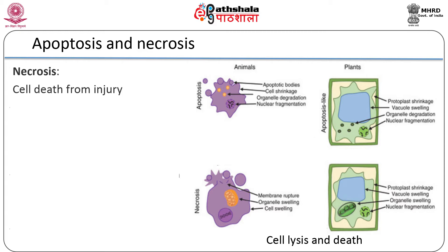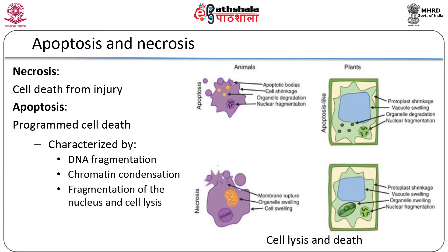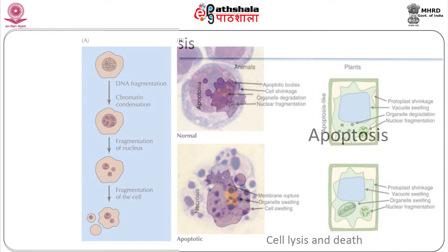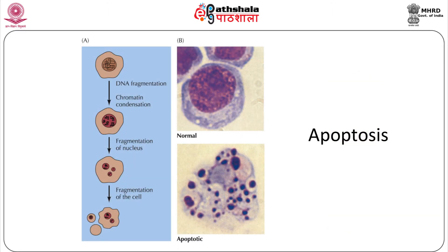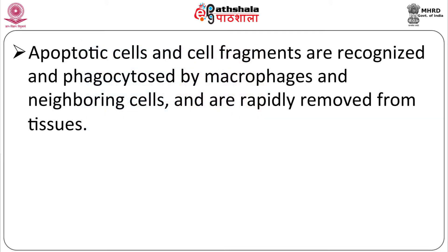Necrosis is an accidental cell death from acute injury, whereas apoptosis is a programmed cell death — an active process. Apoptosis is characterized by DNA fragmentation, chromatin condensation, fragmentation of the nucleus, and finally fragmentation of the cell itself. In the slide we can see how the cell undergoes DNA fragmentation, then chromatin condensation, fragmentation of the nucleus, and finally fragmentation of the cell — this procedure is known as apoptosis.